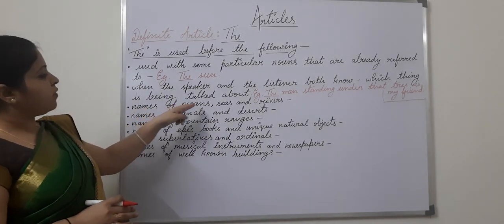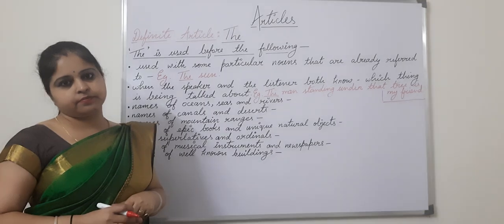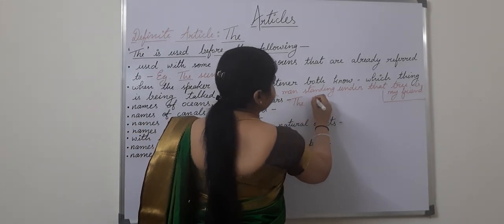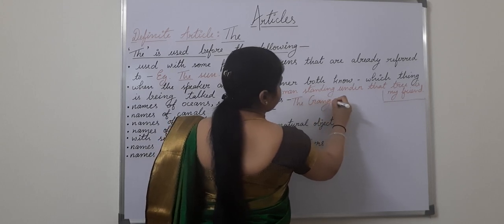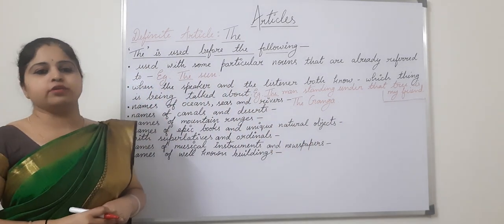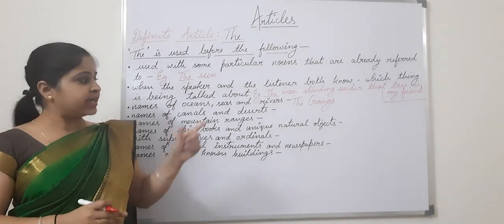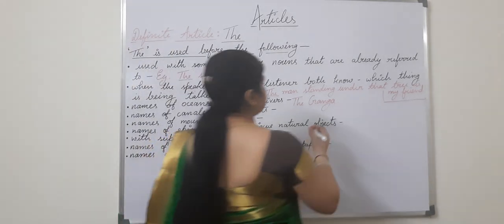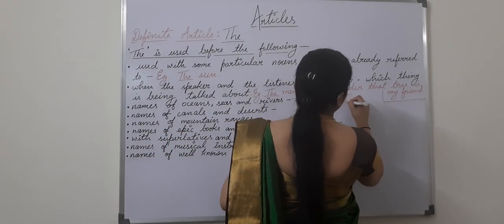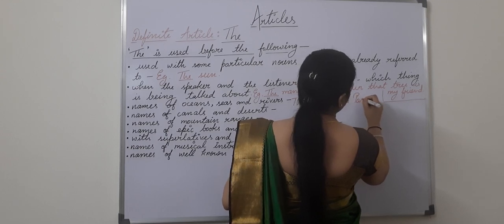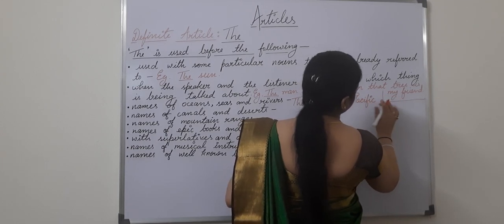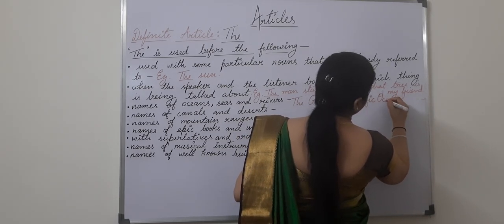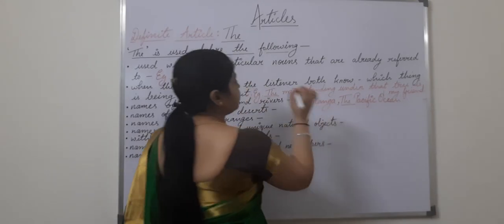Next point: names of oceans, seas, and rivers. For example, 'the Ganga' — there is only one in the world, so it will carry 'the'. Same as 'the Pacific Ocean' — it will also carry 'the' before it.